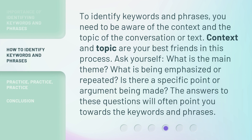To identify keywords and phrases, you need to be aware of the context and the topic of the conversation or text. Context and topic are your best friends in this process. Ask yourself: what is the main theme? What is being emphasized or repeated? Is there a specific point or argument being made? The answers to these questions will often point you towards the keywords and phrases.